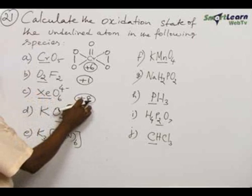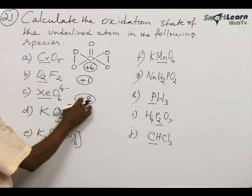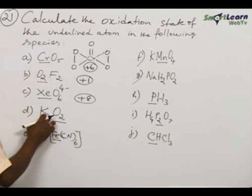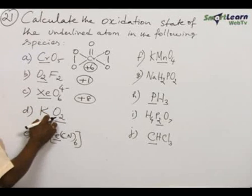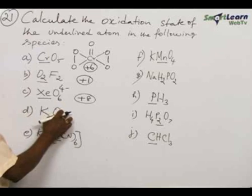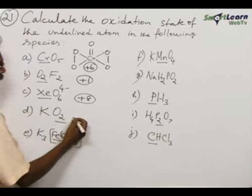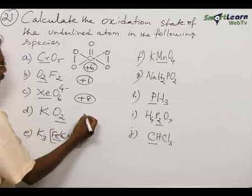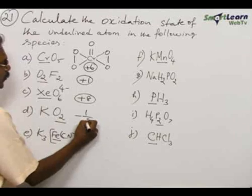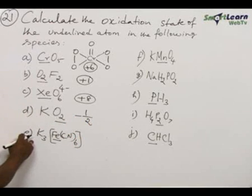Plus 8 is exhibited by xenon. And KO₂ — this is the superoxide. Potassium always takes plus 1, and plus 1 is shared by 2 oxygen atoms, therefore the oxidation state of oxygen must be minus 1/2.